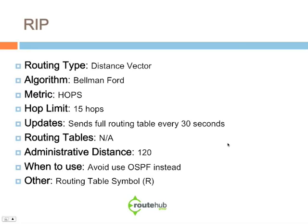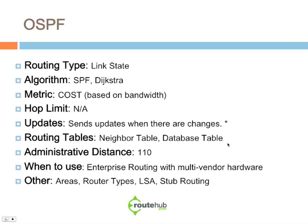Due to issues with fast convergence and other limitations, my recommendation is to avoid RIP and use OSPF instead. OSPF is an industry standard protocol and it is a link state routing protocol. The metric that OSPF uses is cost, and the algorithm it uses gets back to how that cost is calculated.